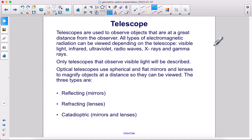Telescopes are used to observe objects that are at a great distance from the observer. All types of electromagnetic radiation can be viewed depending on the telescope: visible light, infrared, ultraviolet, radio waves, x-rays, and gamma rays.